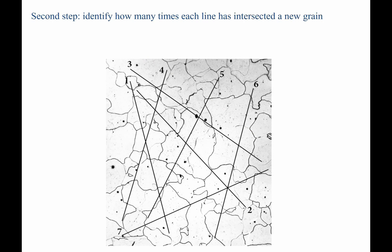The second step is to identify how many times each line intersects a new grain. For example, take line 1. We start counting the times that these things intersect grains. When you add them up — 1, 2, 3, 4, 5, 6, 7 — we see that it has 7 different intersections.